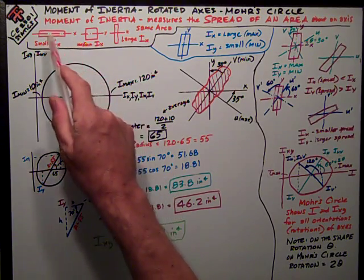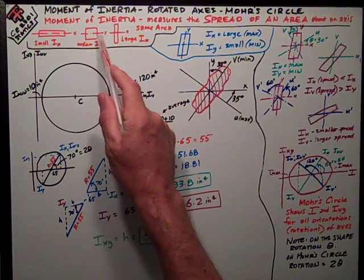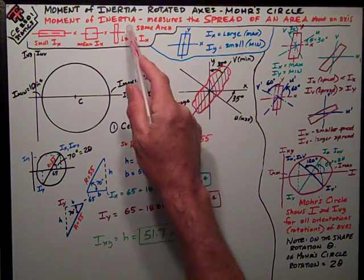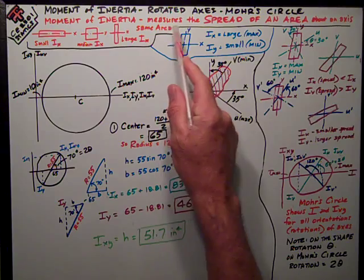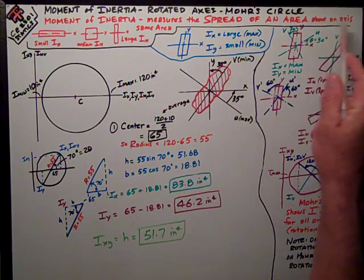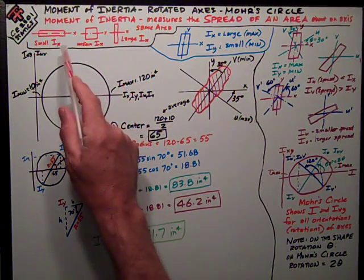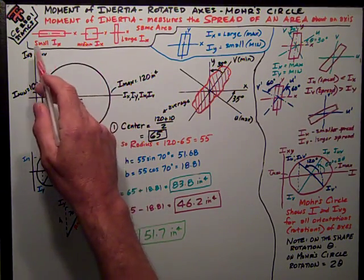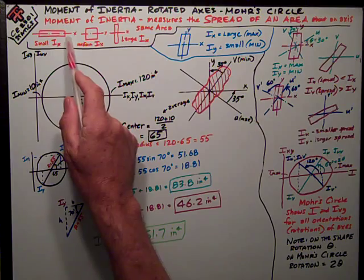First I want to briefly talk about the basic concept of moment of inertia. Up here in the red I've got moment of inertia measures the spread of an area about an axis. So an example, I think a basic example shows what it really means is I have these three areas.